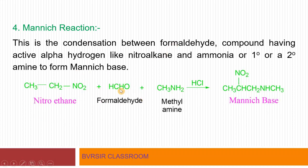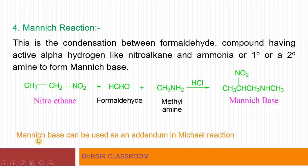For example: formaldehyde (HCHO) plus a compound with active alpha hydrogen (e.g., a nitroalkane) plus a primary amine like methylamine (CH3NH2) undergo condensation reaction to give the Mannich base product. This reaction is very easy and interesting. Note that the Mannich base itself can be used as one of the reactants in subsequent reactions. Study the Mannich reaction in detail.